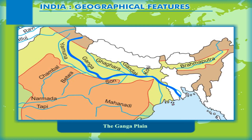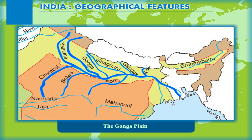The Ganga plain stretches over the states of Uttar Pradesh, Bihar and West Bengal. It is the largest subdivision of the northern plains, named after River Ganga — the largest river of the area. The Ganga plain slopes towards the east and south-east. Rivers Yamuna, Gomti, Ghagra, Gandak and Kosi descend from the Himalayas and are the left-bank tributaries of Ganga. The right-bank tributaries, which descend from the Peninsular Plateau, are Chambal, Betwa, Son, etc.